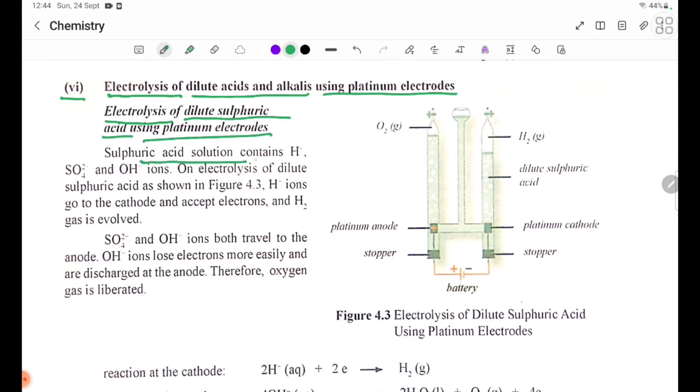Sulphuric acid solution contains H plus, SO4 2 minus, and OH minus ions from H2SO4 and H2O.